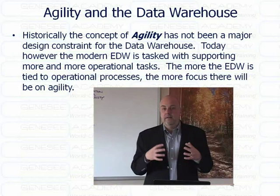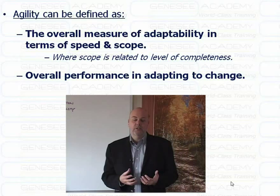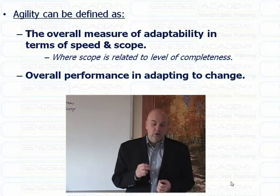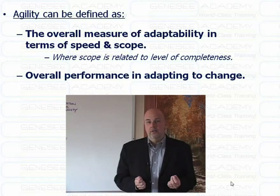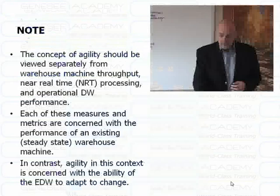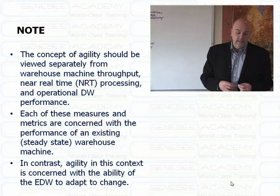Here we're going to talk about what we mean by agility and what the different types of characteristics might be. Agility can be defined as the overall measure of adaptability in terms of speed and scope, within a given level of completeness that we're looking for as far as scope. Another way to look at it is the overall performance with regard to adapting to change. It's important to keep in mind that we should separate this discussion on agility from the things that have to do with warehouse machine throughput.